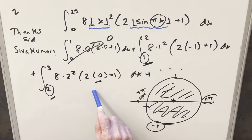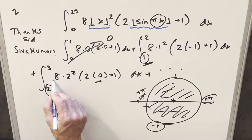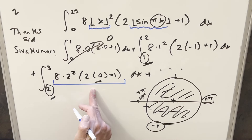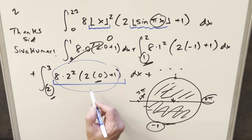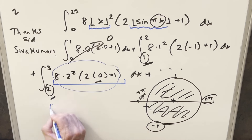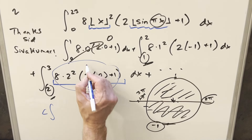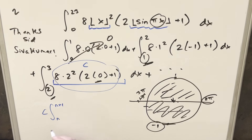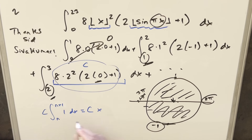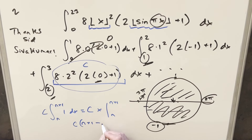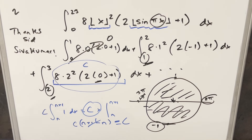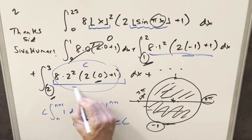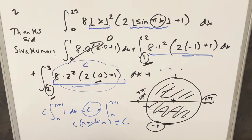We can turn this into a sum because each integral reduces to a constant. Integrating a constant C from N to N+1 just gives C times (N+1 - N) = C. So each integral simply returns its constant value, and our answer is the sum of all those constants from N = 1 to N = 22.